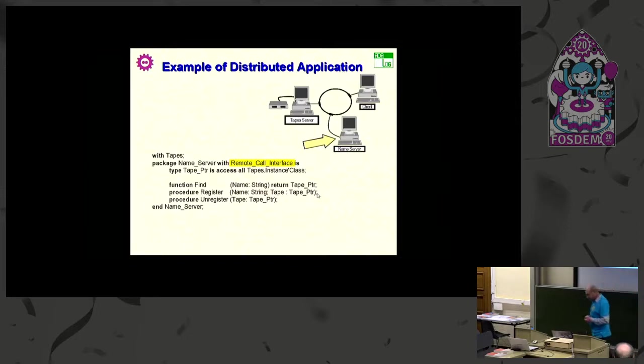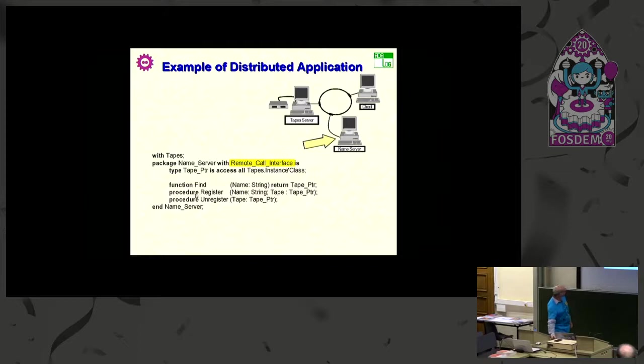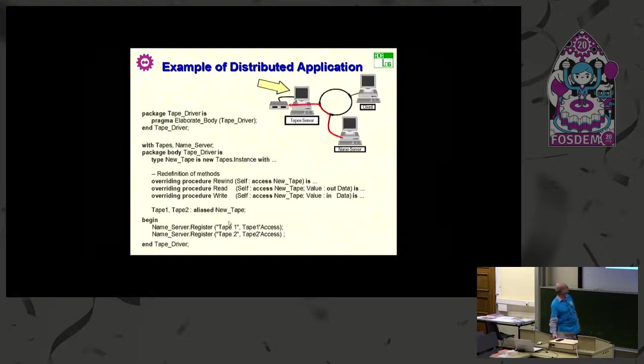If I want to access a distributed object, I mention that I need a name server. So on a different partition I have that name server. It's a remote call interface so you know where it is, and it defines a pointer to that tapes.instance'class, so it's a class-wide type, a type that encloses all descendants. And since it's a regular name server, you register a pointer to a tape under a certain name, you can find from a name the corresponding pointer and you can unregister it if you want.